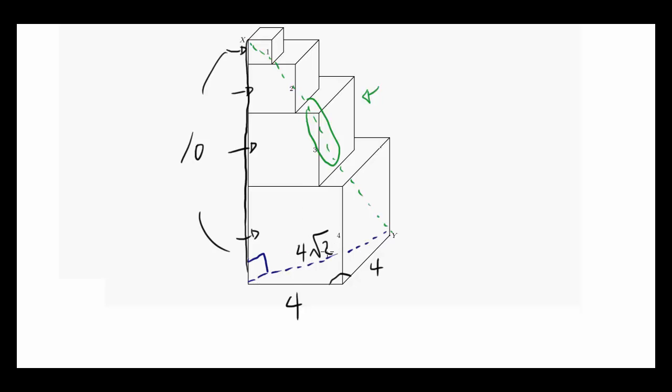Another way of finding this blue length is by letting it equal to X, and you can use the Pythagorean theorem to solve for X. X squared is 4 squared plus 4 squared, and solving for X, you should get 4 times square root of 2.